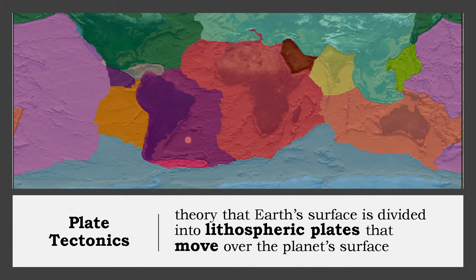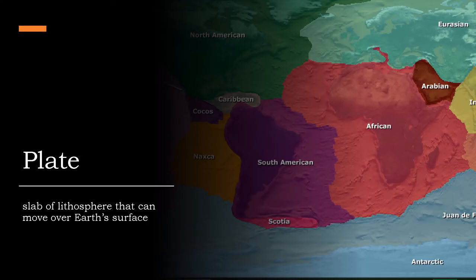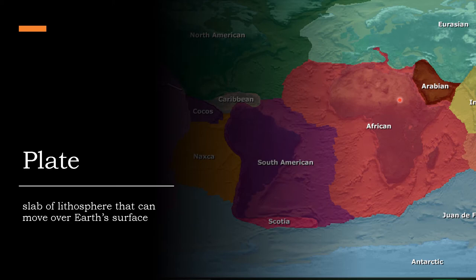We have here an image showing the division of the earth according to lithospheric plates, which is different from the geographical division of the earth into continents and oceans. A plate is the slab of lithosphere that can move over the earth's surface. For example, the African plate includes not only the African continent but also its surrounding oceans and other lands, because plate division is based on the lithosphere, not on geographical divisions like continents and oceans.